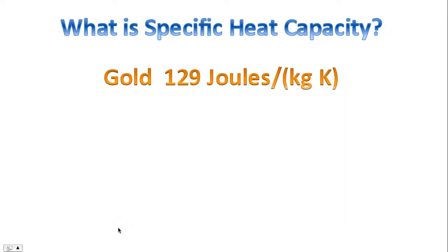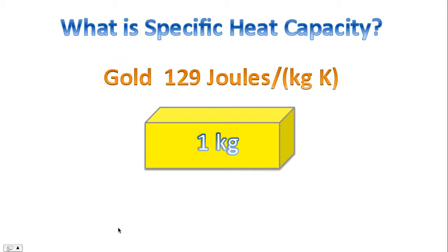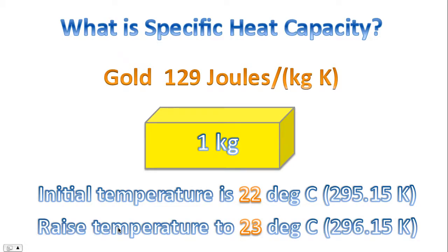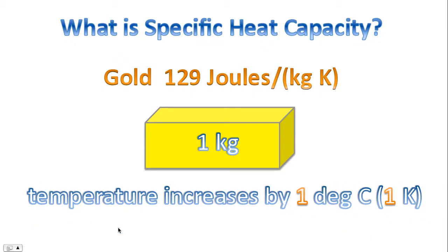As an example, let's look at gold. Gold has a specific heat capacity of 129 joules per kilogram Kelvin. So imagine we had one kilogram of gold, and imagine the initial temperature is 22 degrees Celsius, and that we want to raise the temperature to 23 degrees Celsius. So in other words, we're increasing the temperature by one degree Celsius or one Kelvin.